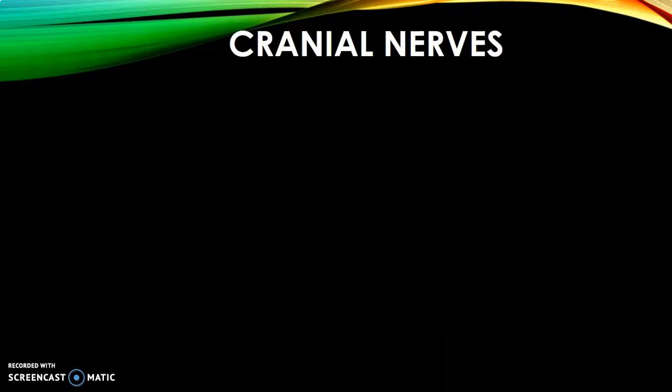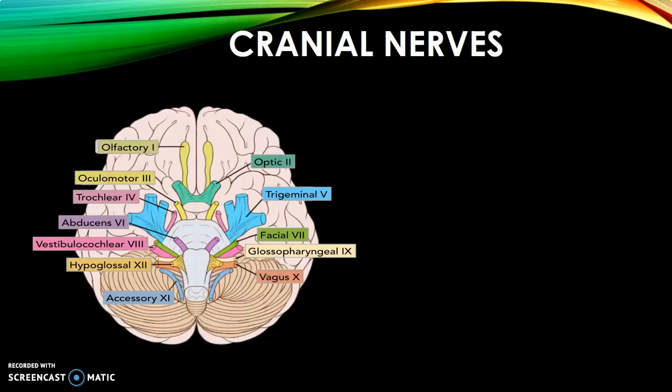Let's start with cranial nerves. There are 12 pairs: olfactory, optic, oculomotor, trochlear, trigeminal, abducens, facial, vestibulocochlear, glossopharyngeal, vagus, accessory, and hypoglossal. Olfactory is number one — we only have one nose. Optic is number two — we have two eyes. Oculomotor controls upward eyeball movement. Trochlear controls downward movement.